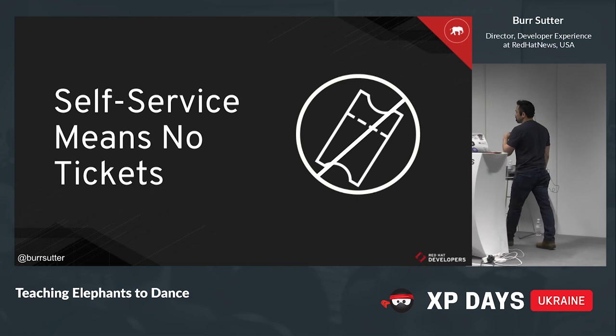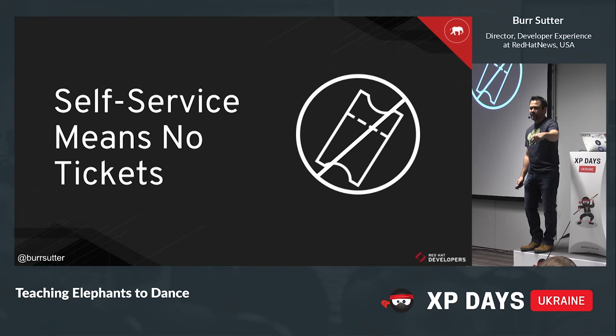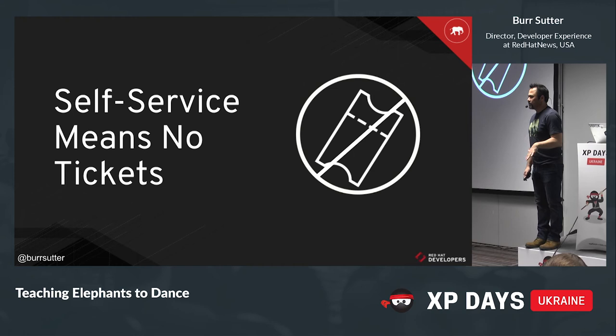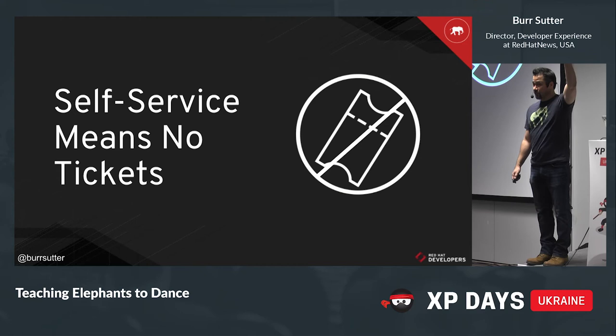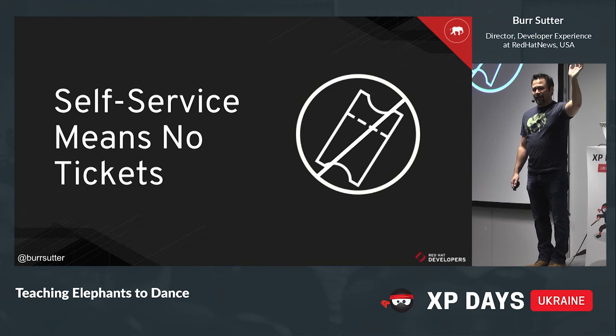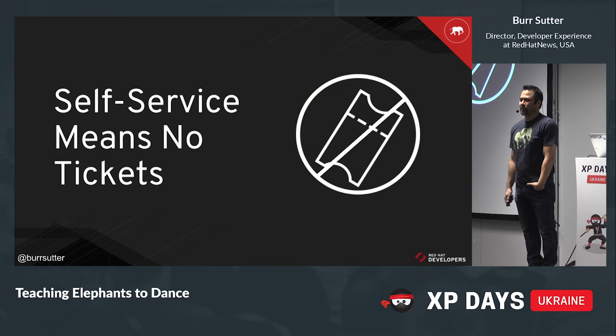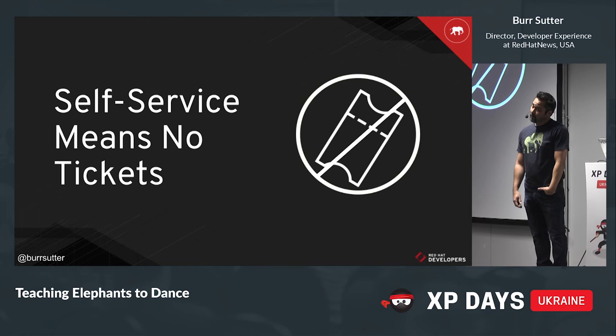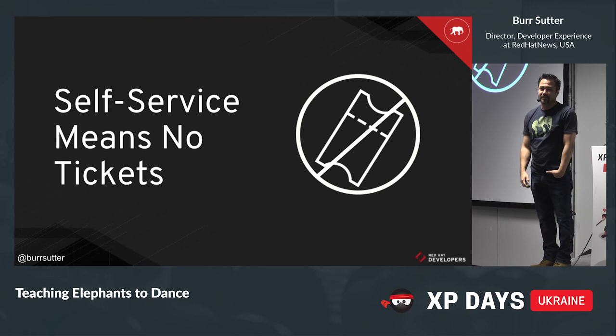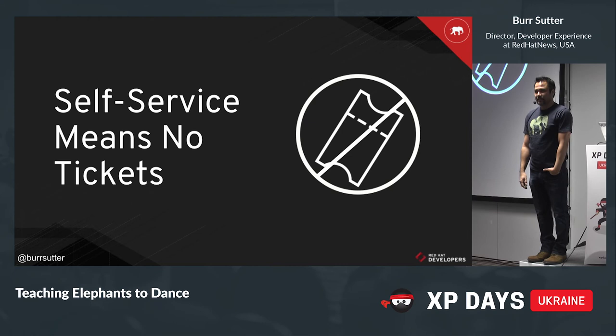Self-service also means no ticketing. What many organizations have done is: if you need a virtual machine, file a ticket, define your configuration, get it up the food chain to a VP who agrees yes you can have it. Eventually out of that queue comes the thing you wanted — and it turns out it wasn't quite right. The ticketing system is simply a way for people to hide behind something and say 'it wasn't my problem.' An organization that relies on their ticketing system to place blame is an organization that's going to fail going forward.